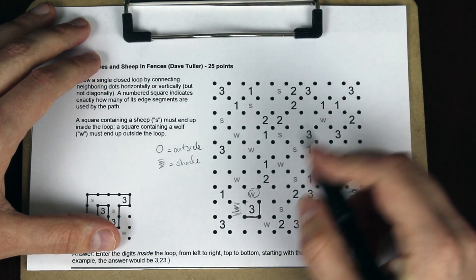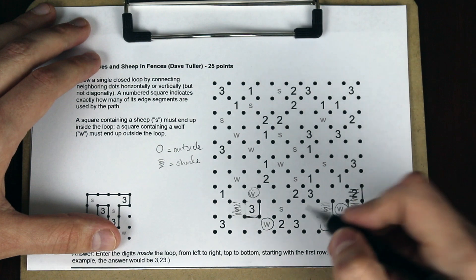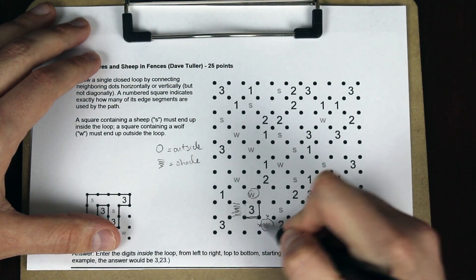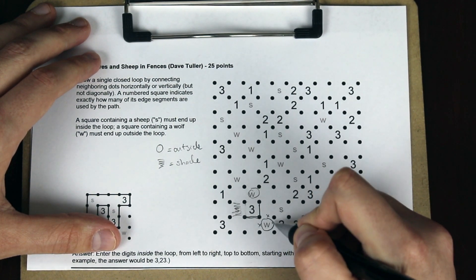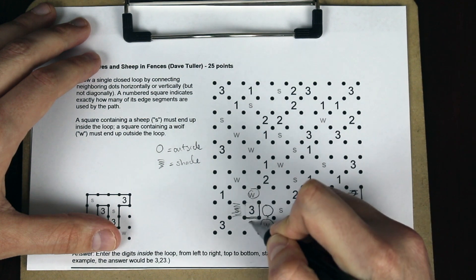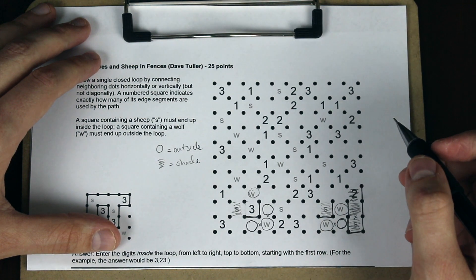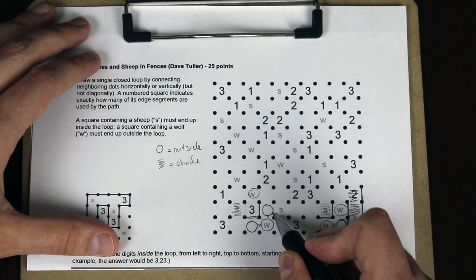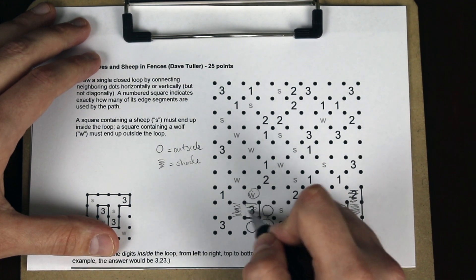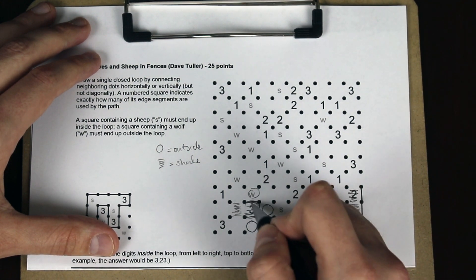And we don't know where that third segment goes yet. But we do know we have two X's here. We can't have line segments there. So these must be outside the loop as well. Once we know this is outside the loop, by this line this must be inside the loop, and we now know it goes like this.